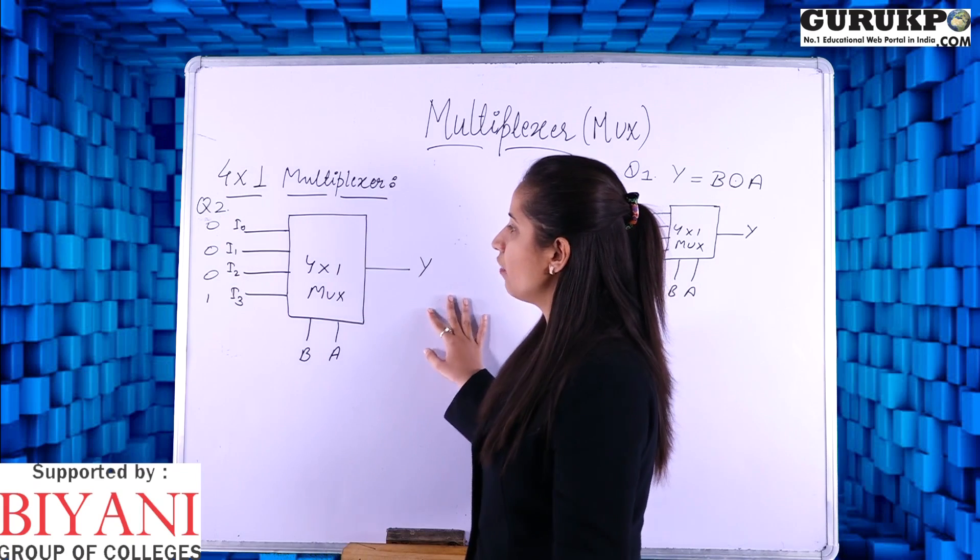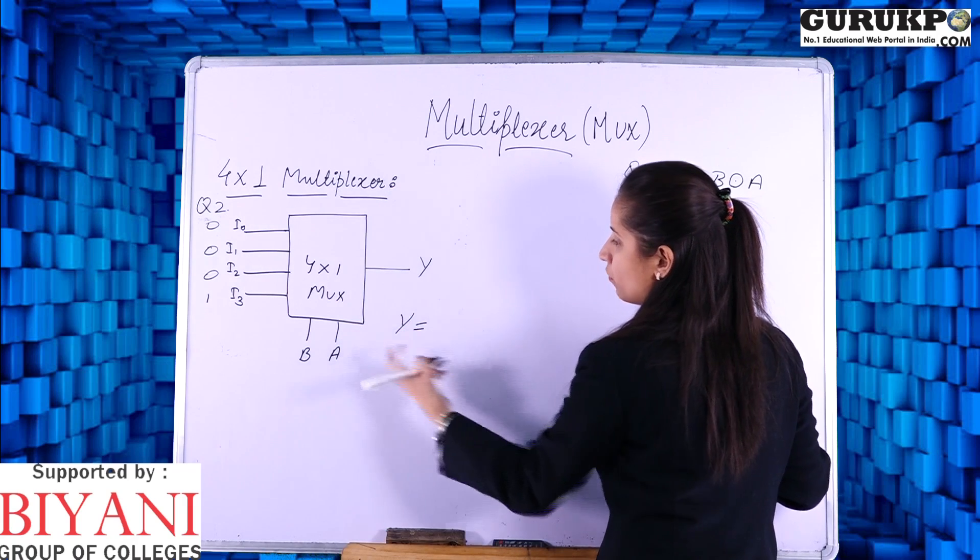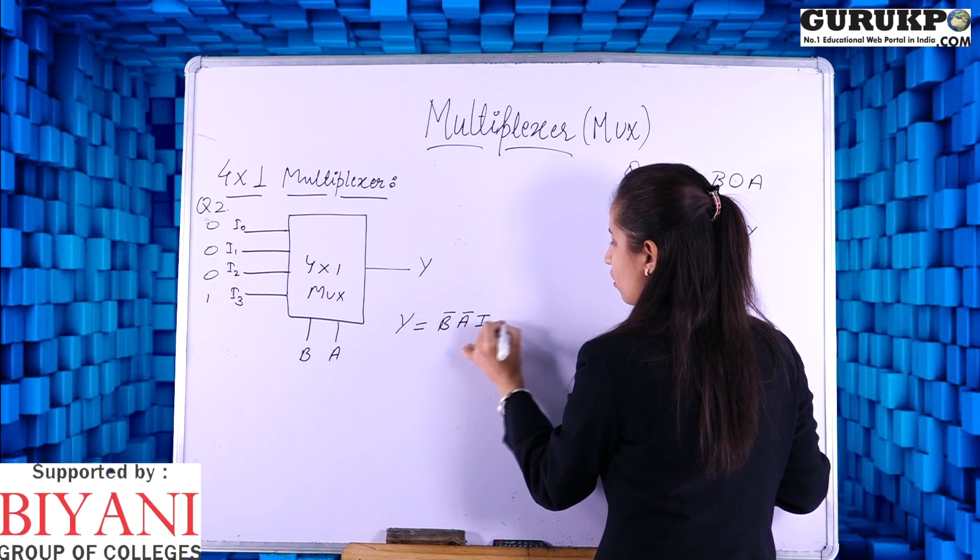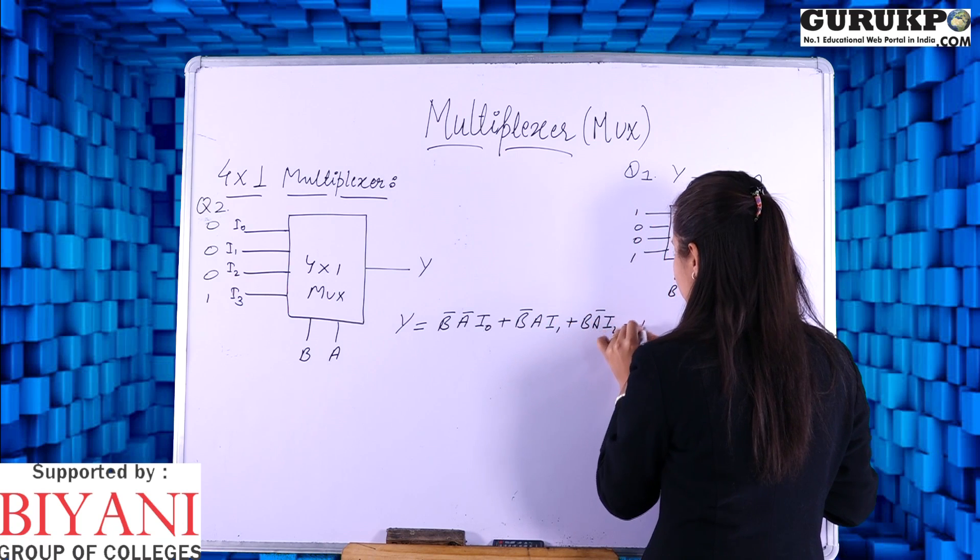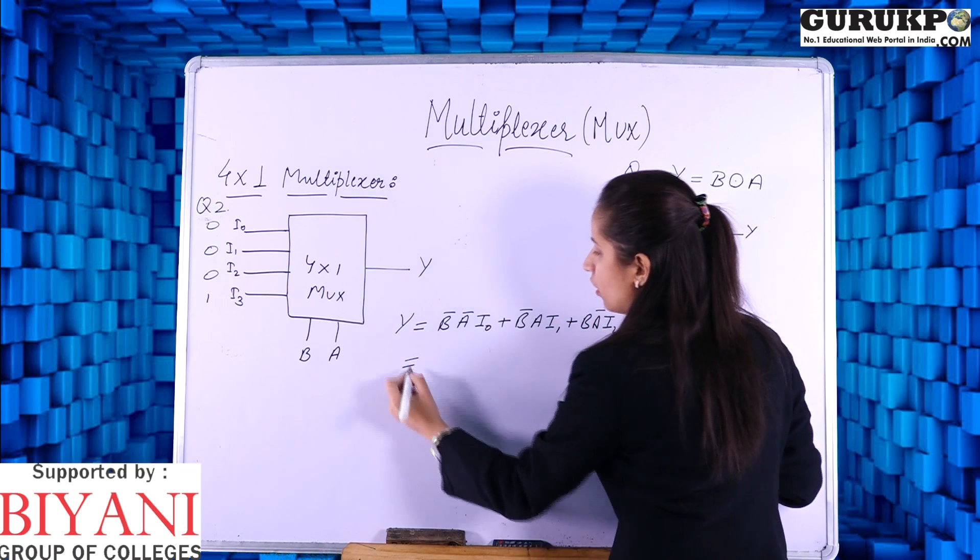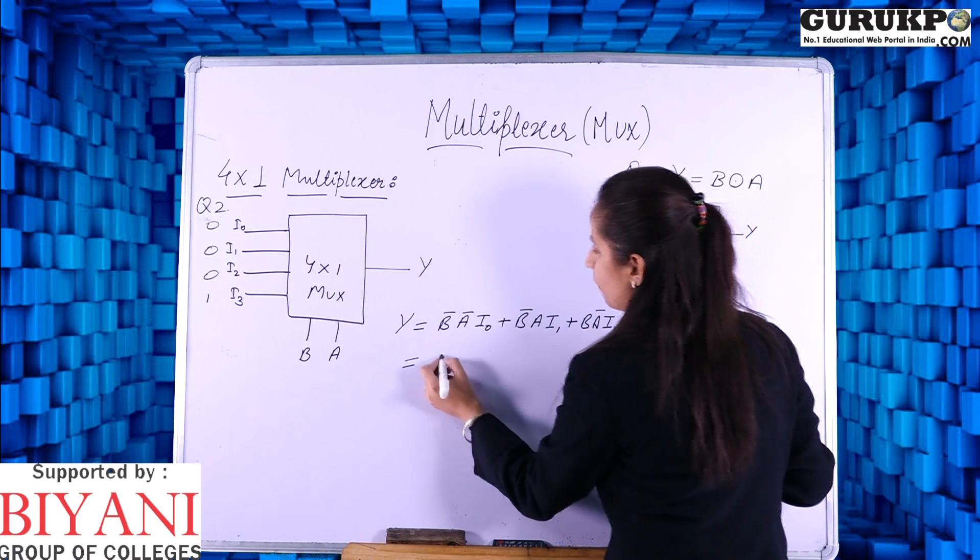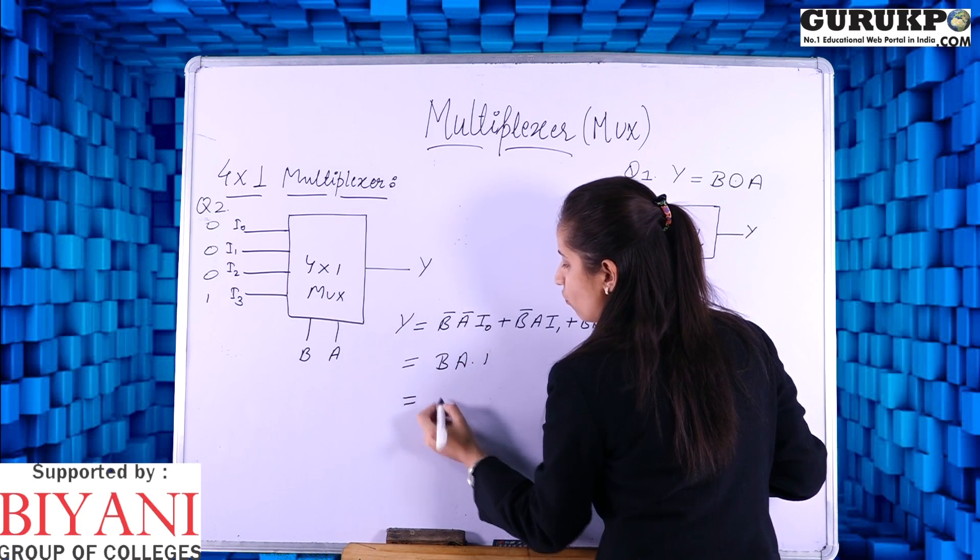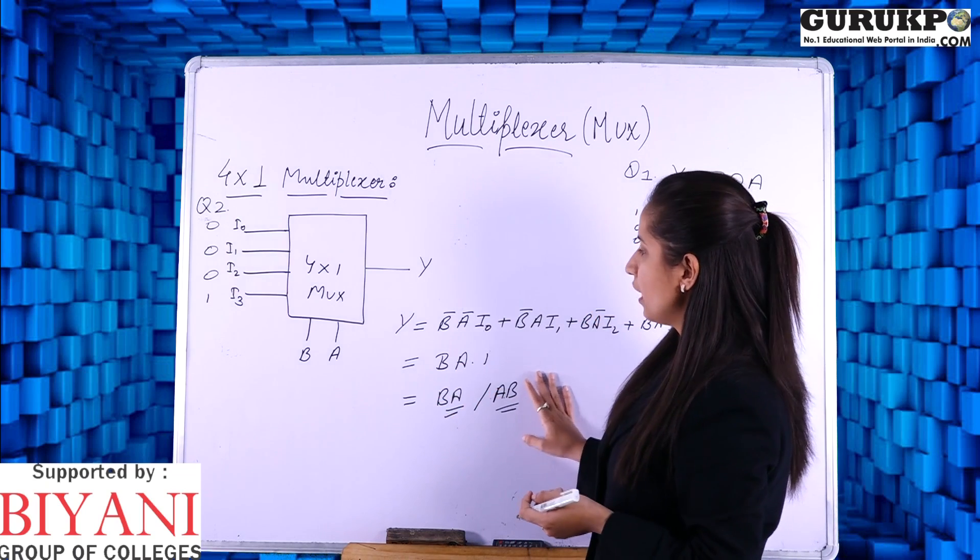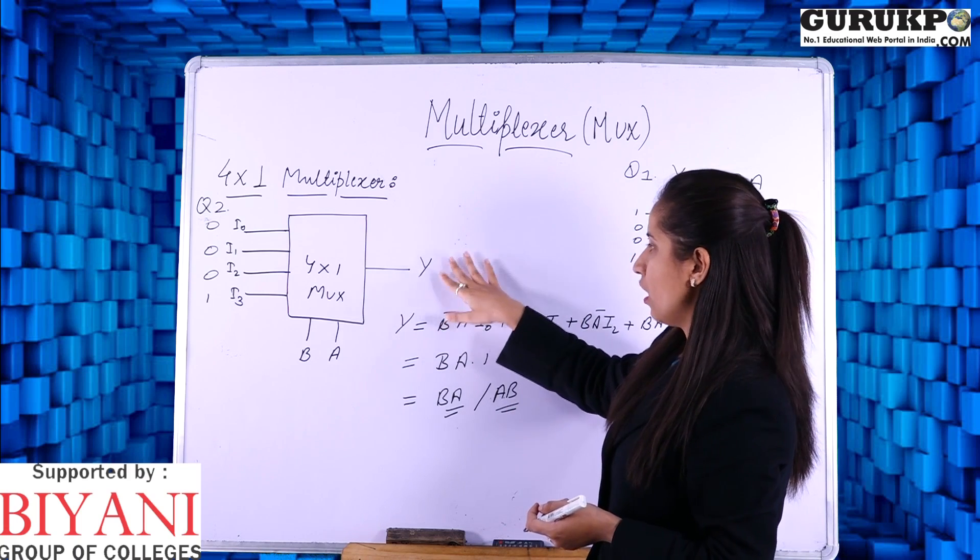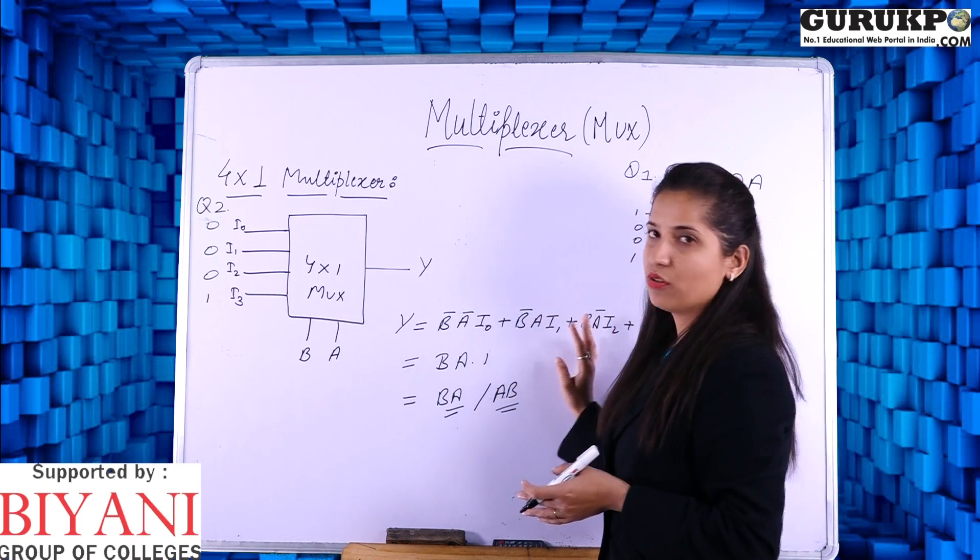Let us try one more question and here we have the inputs 0, 0, 0 and 1. Again using the steps first write the SOP form. B bar A bar I0 plus B bar A I1 plus B A bar I2 plus B A I3. Put the values, I0 is 0. These terms will be 0. You are left with only term B A dot 1. Your output will be B A or you can write it as A B. It is A dot B. By this method you can calculate the value of Y that is the output if number of inputs are given using the selection line. You have to remember the truth table and the logic diagram also.